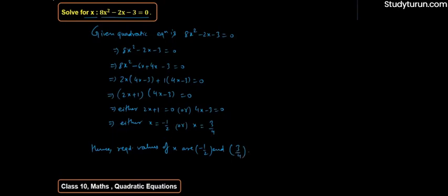Is question mein quadratic equation ko humne solve kiya middle term ko split karke. Minus 2x ko likha minus 6x plus 4x. Factorize kiya to 2 factors aaye, 2 factors ka product 0 tha, iska matlab 2x + 1 = 0 aur 4x - 3 = 0, to x ki do possible values aayi: minus 1 by 2 aur 3 by 4. Yahi hamara final answer hai. Thanks for watching this video, please subscribe to our YouTube channel.